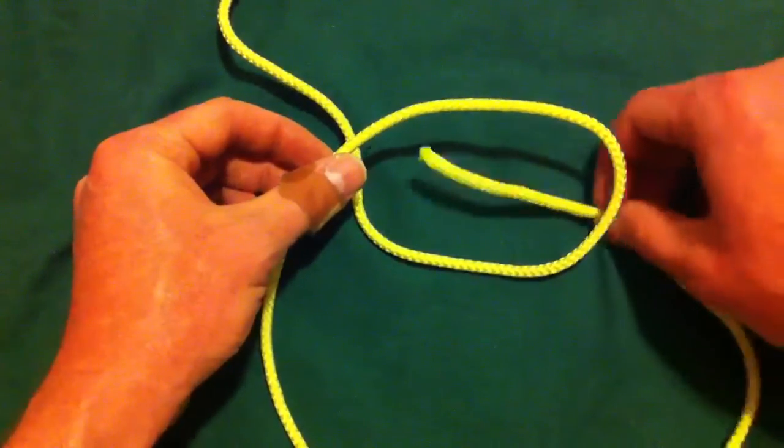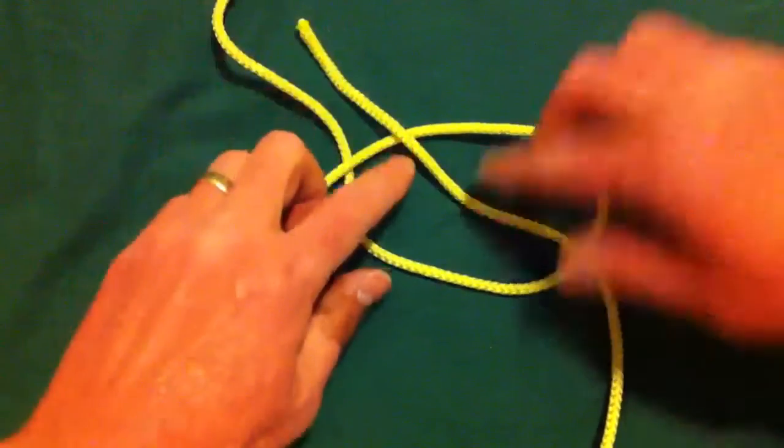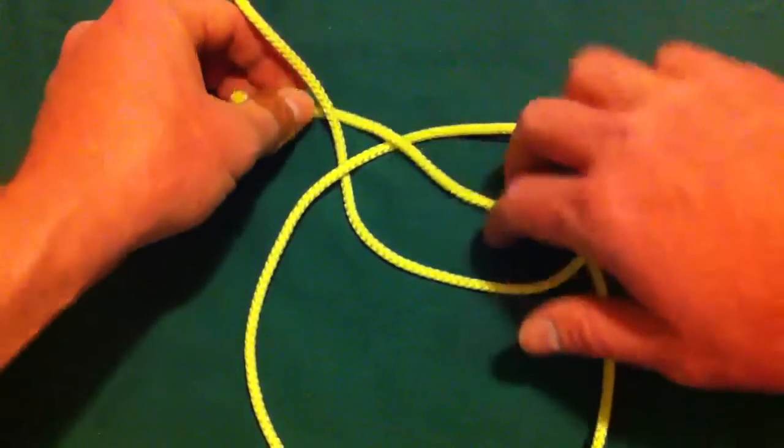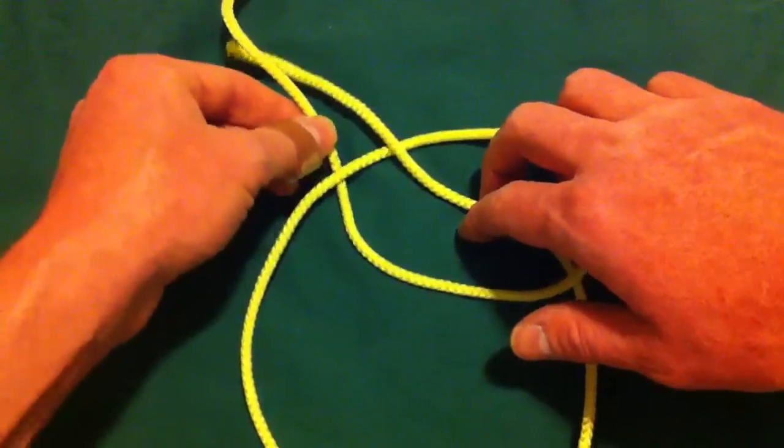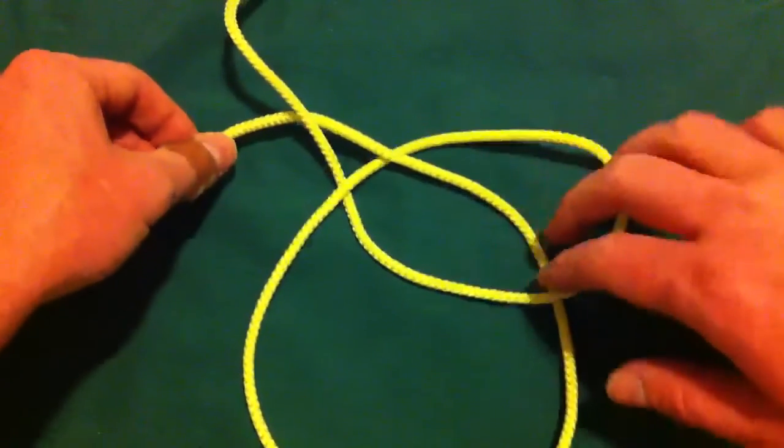So that as I come out of that loop and go around the standing part of the rope, it will bind this to the loop. I'm not sure if that makes sense, but let me go ahead.